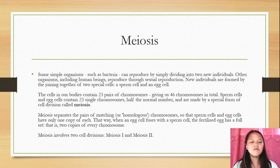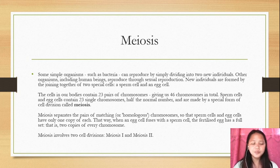Meiosis separates the pairs of matching or homologous chromosomes so that sperm cells and egg cells have only one copy of each. That way, when an egg cell fuses with a sperm cell, the fertilized egg has a full set, that is two copies of every chromosome. Meiosis involves two cell divisions, meiosis I and meiosis II.